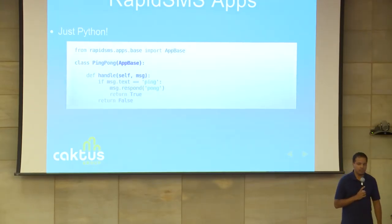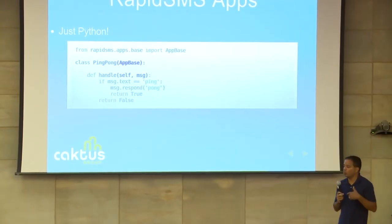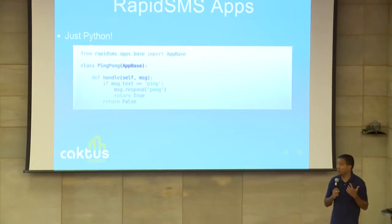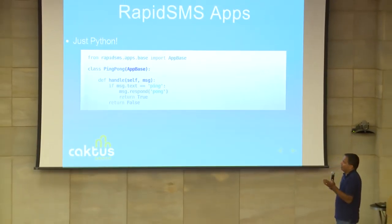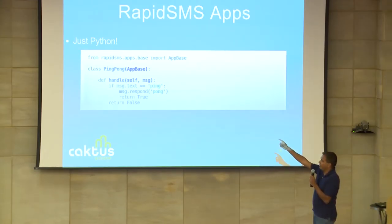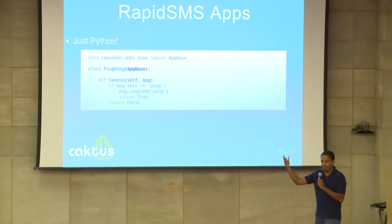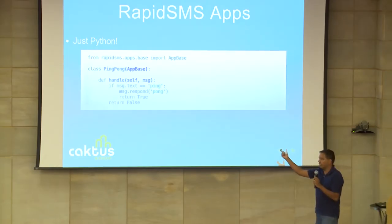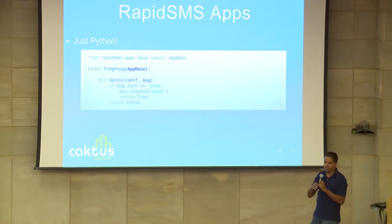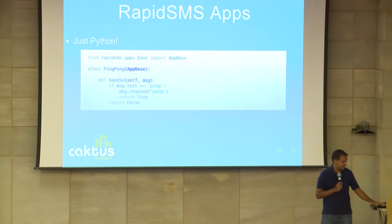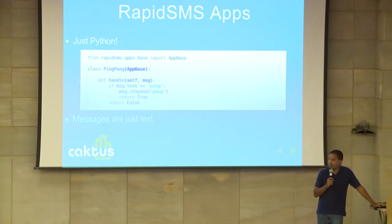The second step is to build an application — just what you do with the information that comes in. It's just Python. You import from app base and define a handle method that accepts a message. That message has an attribute called text. You can look at that text and say: if I receive the message 'ping', then I'm going to respond 'pong'. Then you return true, which tells the system you're done handling this message. That's the simplest possible RapidSMS application.